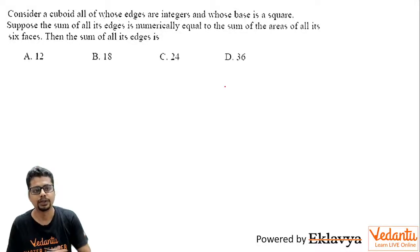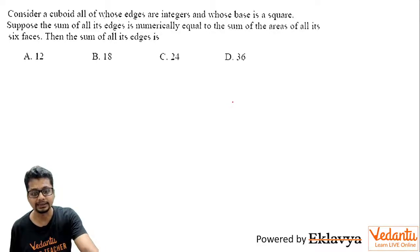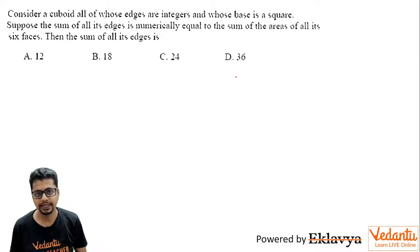Hi everyone, the question is: consider a cuboid all of whose edges are integers and whose base is a square. Suppose the sum of all its edges is numerically equal to the sum of the areas of all its six faces. Then the sum of all its edges is—that is, the numerical value of the sum of all its edges.